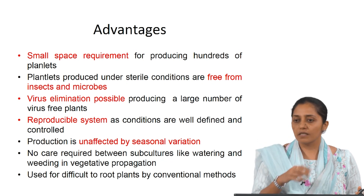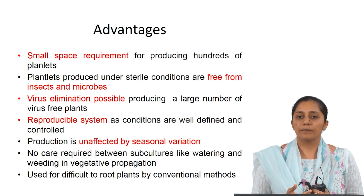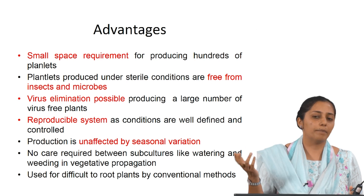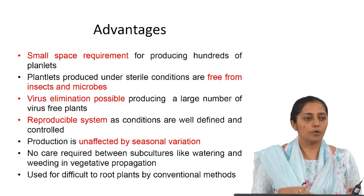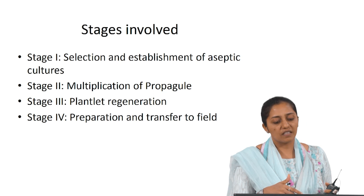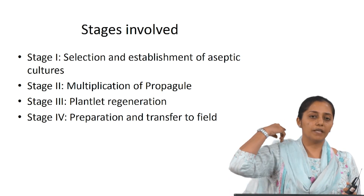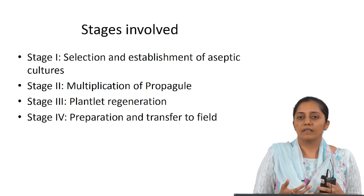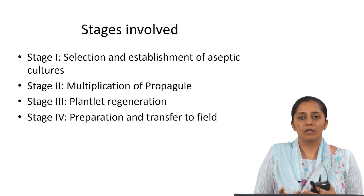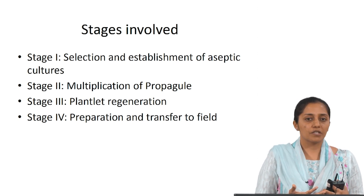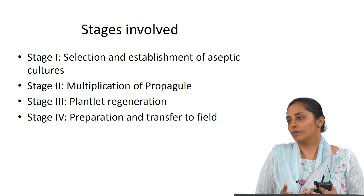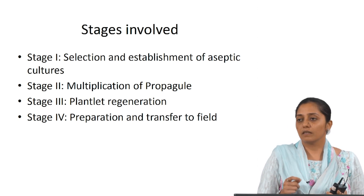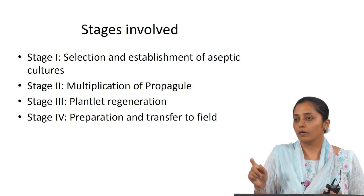Production is unaffected by seasonal variations, which might otherwise affect natural propagation of a plant. The stages involved are: selection and establishment of an aseptic culture, then multiplication of the propagule, then plantlet regeneration, and finally preparation and transfer to the field. The step of preparation and transfer to the field is a long-drawn process — it takes time.